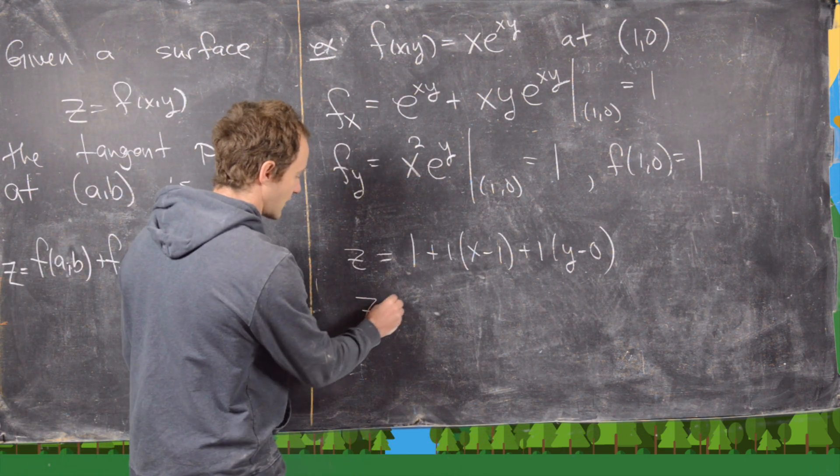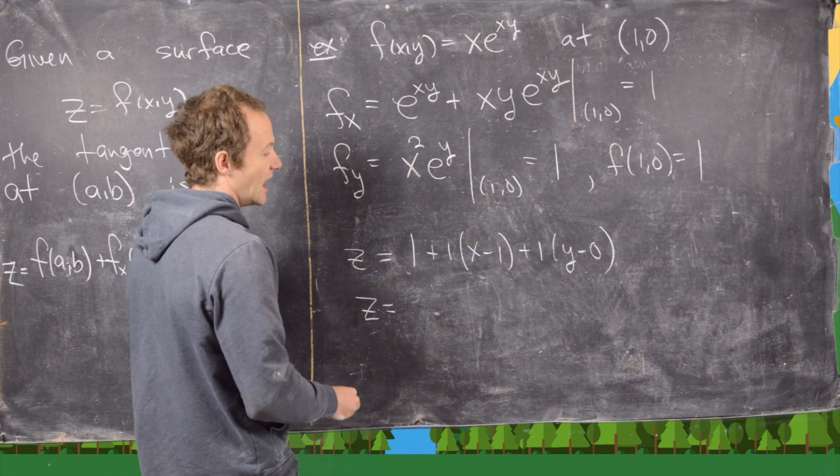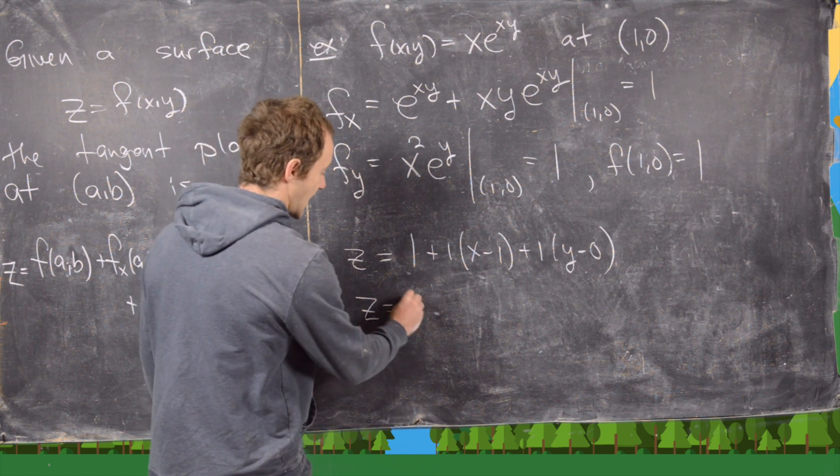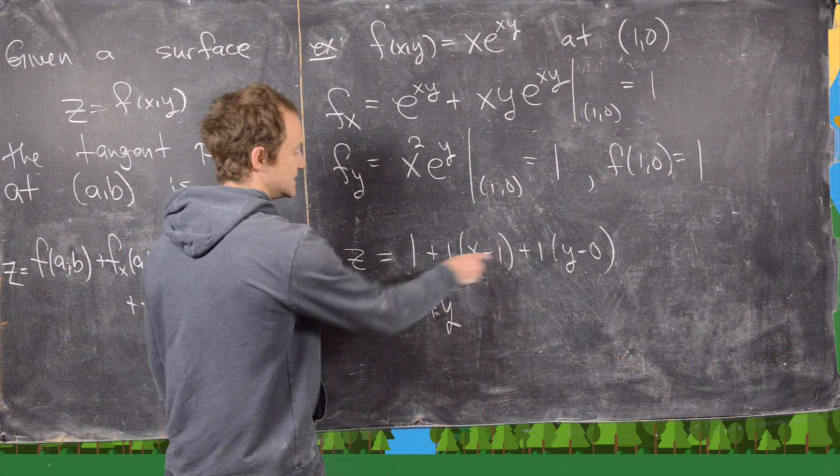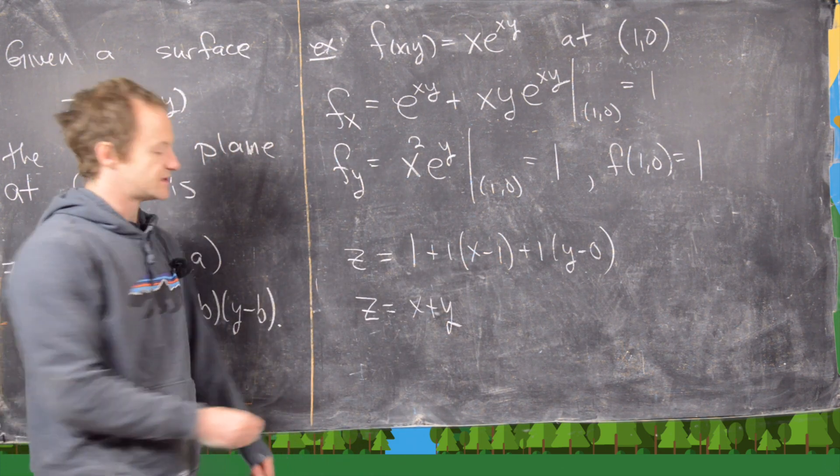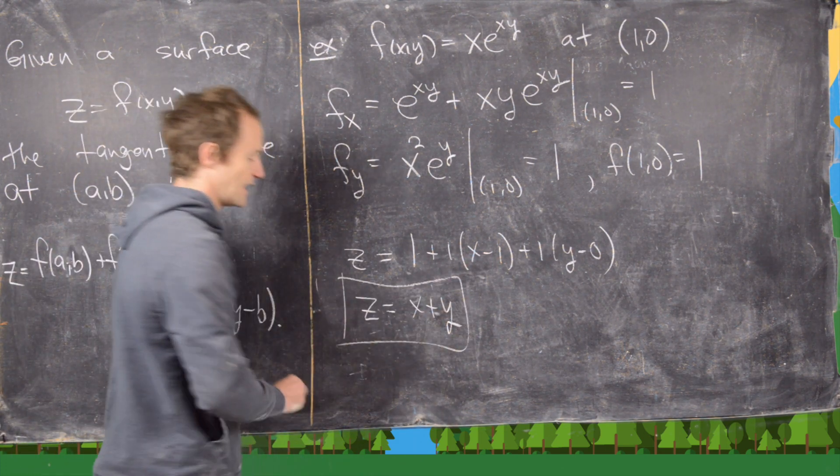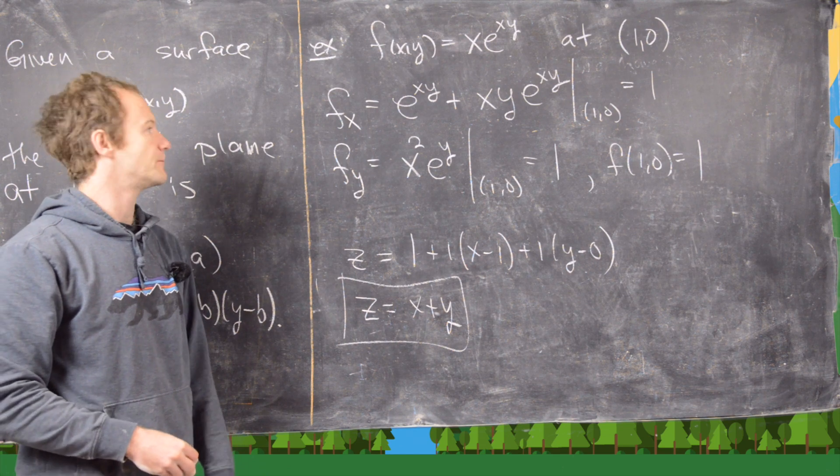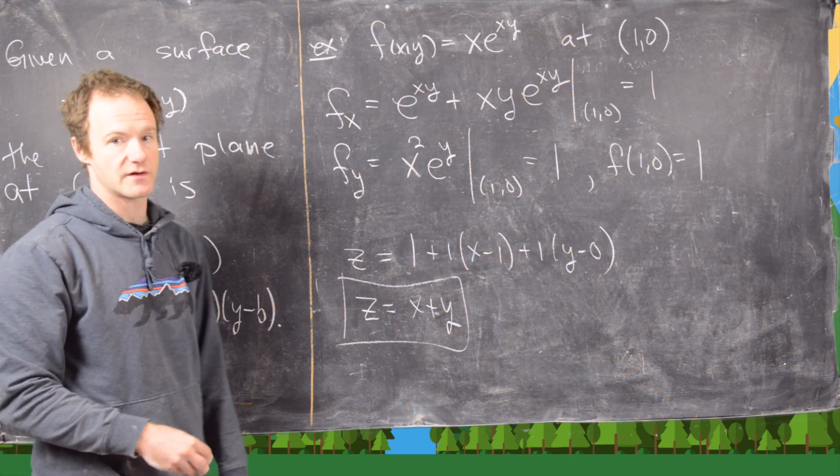Now we can simplify that out a little bit. We're going to get z equals x plus y. Notice these ones are going to cancel. So this is the equation of our tangent plane in this case. I'll clean up the board and then we'll do another example.